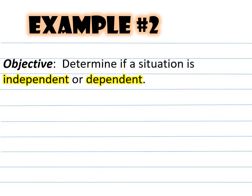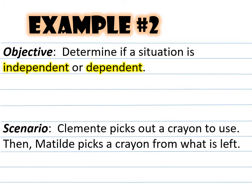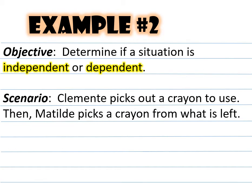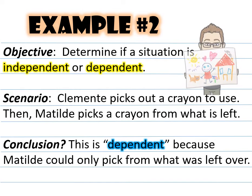Example number two: determine if a situation is independent or dependent. Clemente picks out a crayon to use, then Matilde picks out a crayon from what is left. The conclusion is that this is dependent because Matilde could only pick from what was left over.